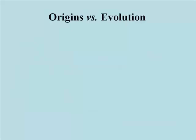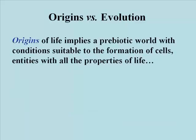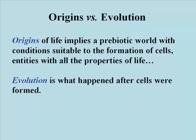Let's contrast life's origins and this property of life called evolution. Understanding the former requires that we can postulate a reasonable scenario for how the physical conditions and the molecules in a primordial soup might have favoured the formation of cells — that is, entities with all those properties of life. Evolution is a property that happens only to living things, after cells emerged on Earth.